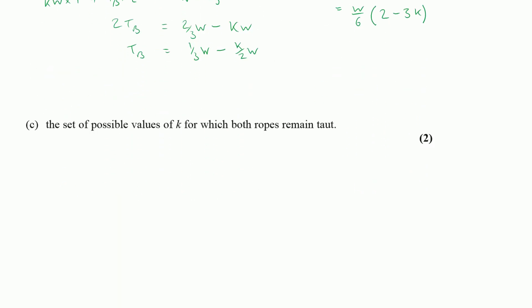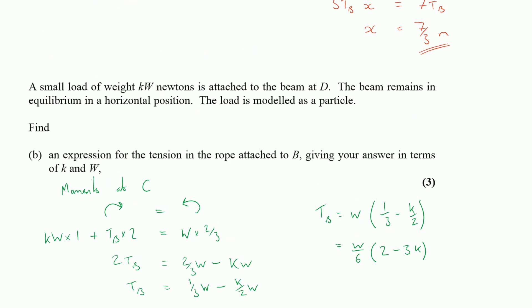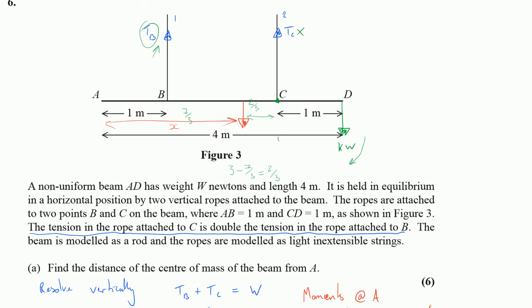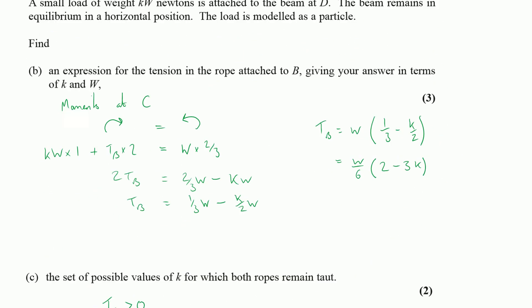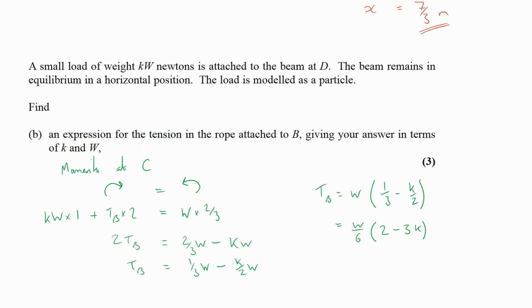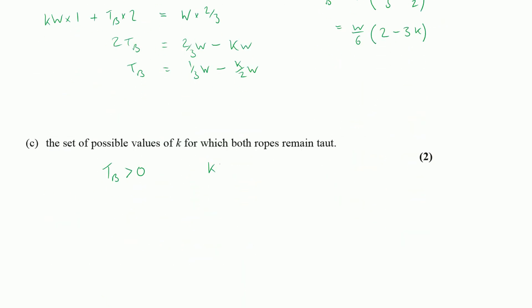Right, last part of this question, we're looking to find a set of possible values for K for which both ropes remain taut. Now for the ropes to remain taut we need to ensure that the tension is positive, so I want the tension in B to be greater than 0. Now also thinking about where K comes from, K is a multiple of W that is attached at D, so K itself has to be a positive value. So we want K to be strictly greater than 0.